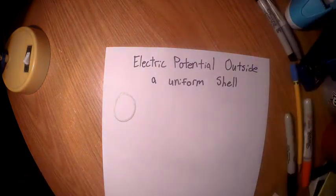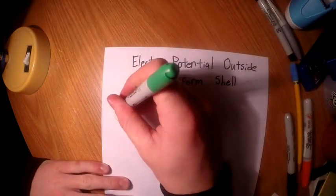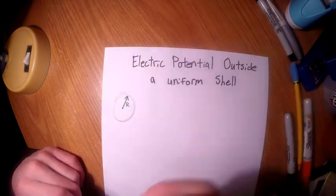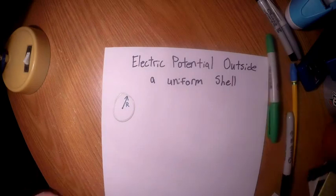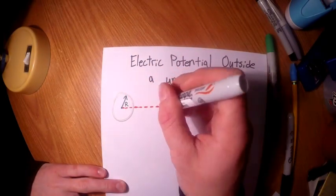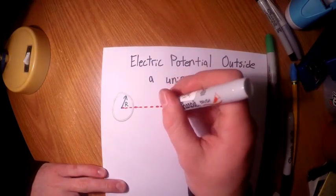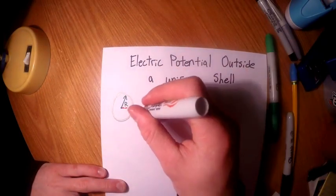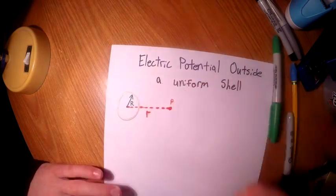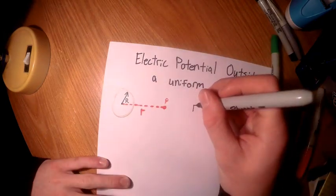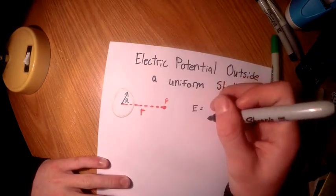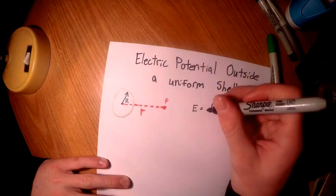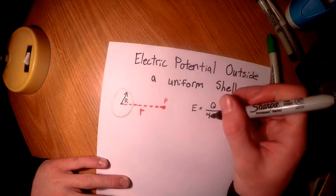Here we're going to start with a drawing of the shell. R drawn in green represents the radius to the outside of the shell, and point P, represented by distance lowercase r in orange, is the point we're measuring to.